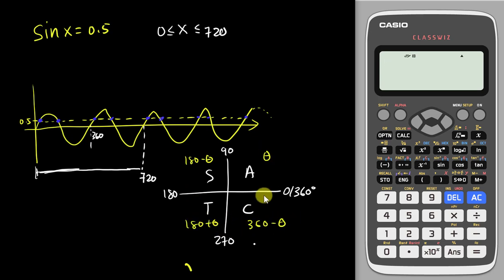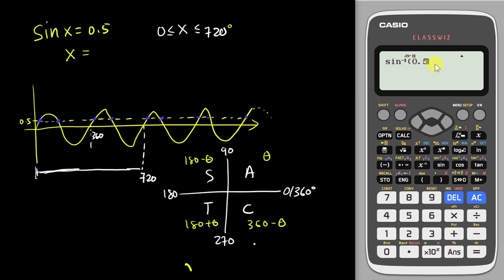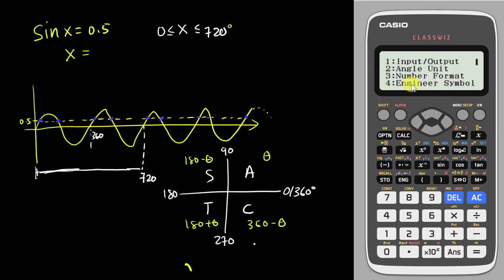For example, to find the first angle, you just move sine to the other side to get inverse sine of 0.5. Make sure the D symbol is showing above your calculator for degree mode. If not, press Shift, Menu, choose angle units, and tap 1 for degree. Then tap Enter — you get 30 degrees.